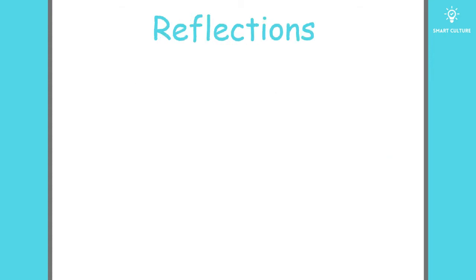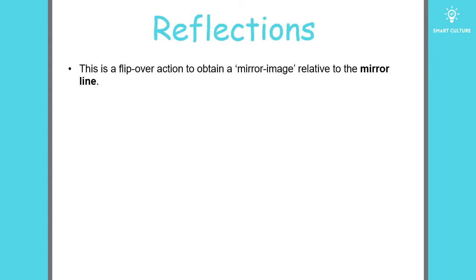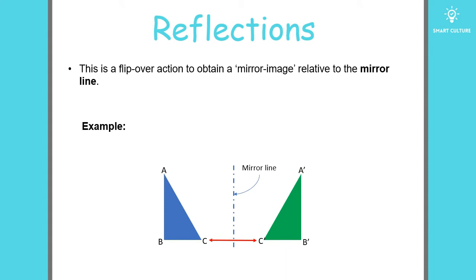Now let's talk about reflections. This is a type of transformation — a flip over action to obtain a mirror image relative to the mirror line. The mirror line is indicated on the diagram. Triangle ABC, the blue triangle, is the original, and the green triangle is its image. You can see that the green triangle has been reflected — it is a mirror image of the blue triangle.